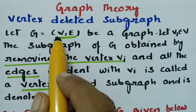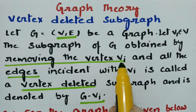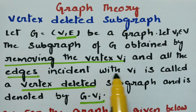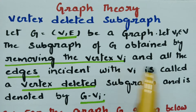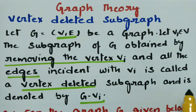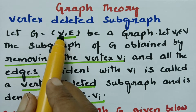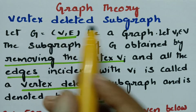V1 belongs to V. The subgraph of G obtained by removing the vertex Vi and all the edges incident with Vi is called the vertex deleted subgraph, and it is denoted by G minus Vi. So out of all the vertices, I am going to remove Vi. Before removing Vi, I have to remove all the edges which are incident with Vi, and the new graph which is formed is called the vertex deleted subgraph.